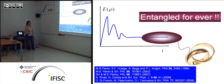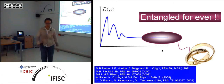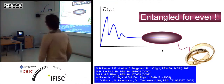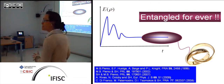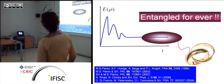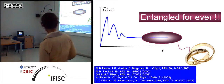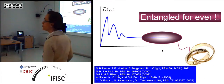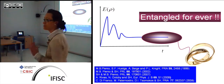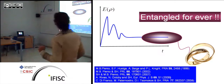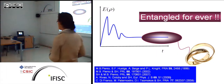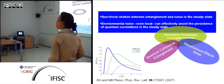So when the system is not in equilibrium, it may be that the entanglement survives forever. This is, I guess, nice for us. But nowadays I would argue that the effect, which at the beginning was a little bit of a rarity, is now starting to be well-established; it has been observed theoretically in systems subject to very different types of noise.